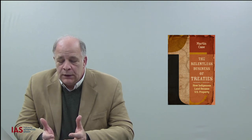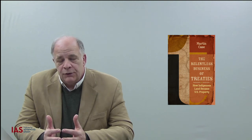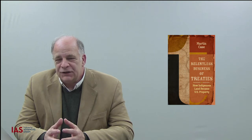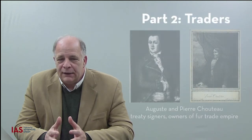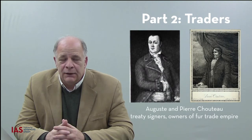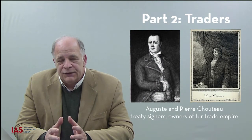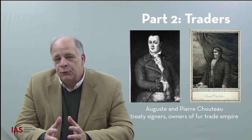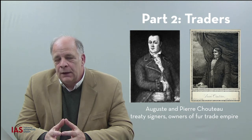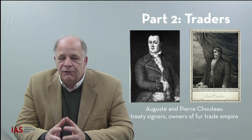In part one, the book outlines how land speculation was the most immediate motivation for U.S. expansion across the continent. The second part talks about how trade, specifically the fur trade, was the mechanism by which the U.S. expanded, because it was intricately involved in engineering land cession treaties.